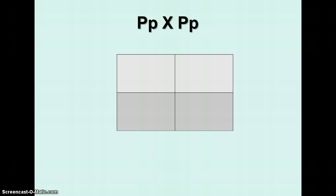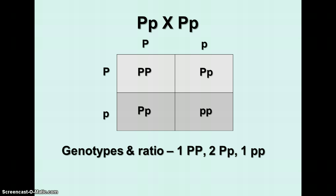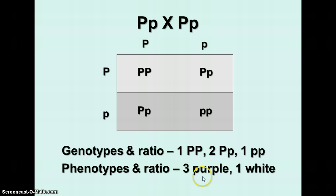Here's our Punnett square. We're crossing big P little p times big P little p. We put the gametes of one parent at the top and the gametes of the other parent at the left side. The genotypes are going to be one big P big P — homozygous dominant — two big P little p — heterozygous — and one little p little p — homozygous recessive. The phenotypes are going to be three purple and one white. The capital P is the dominant allele, and if the dominant allele is present it masks the recessive one. Three of the four possible offspring have a capital P making them purple, and the one with only two little p's will be white.